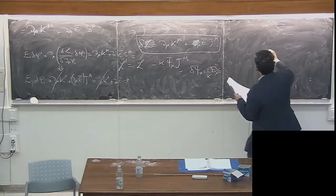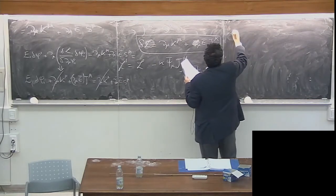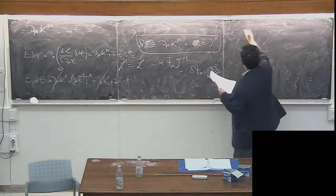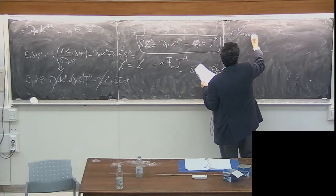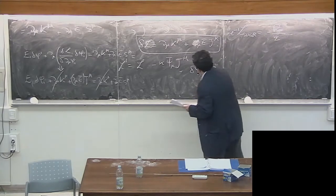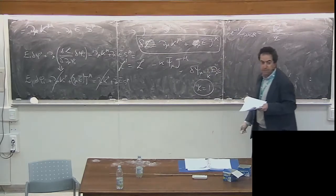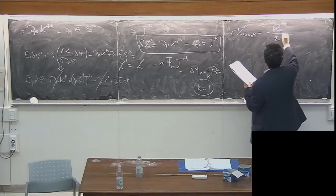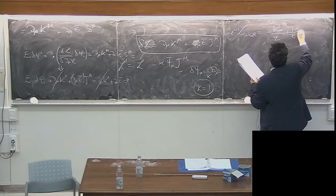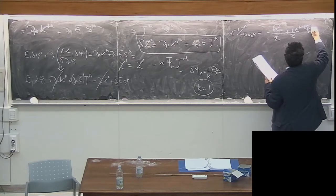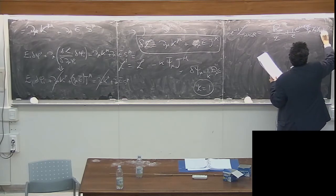By consistency we also have to add the Einstein-Hilbert term, because psi_mu cannot live without Einstein-Hilbert. So we write the Lagrangian in this form: e^{-1} times R/2 — here I'm setting kappa equal to 1 for simplicity — plus (1/e) epsilon^{mu nu rho sigma} psi_mu bar gamma_5 gamma_nu D_rho psi_sigma.